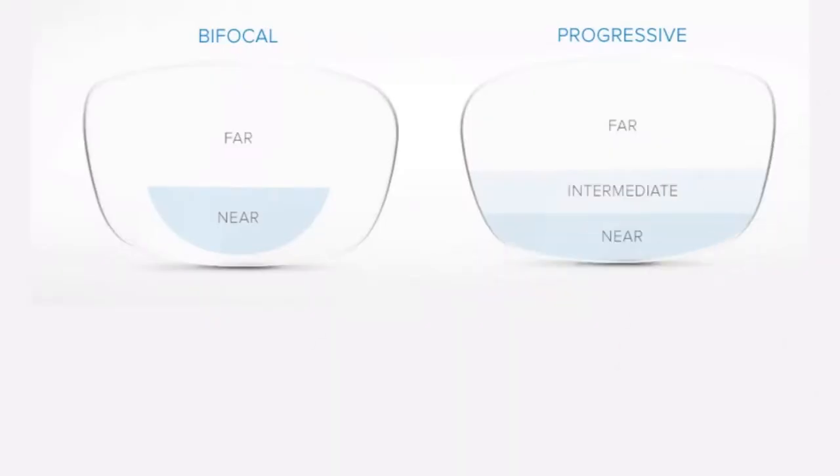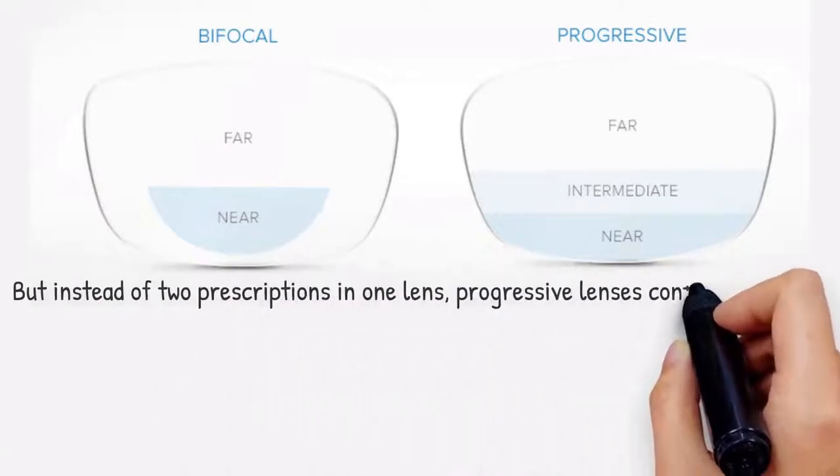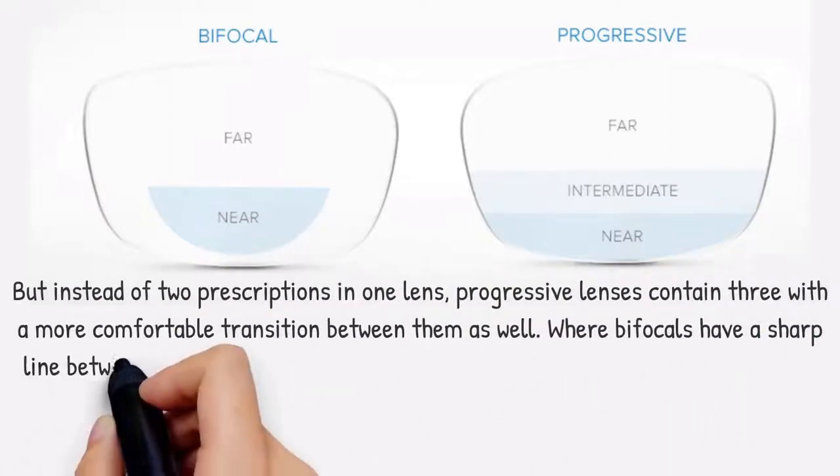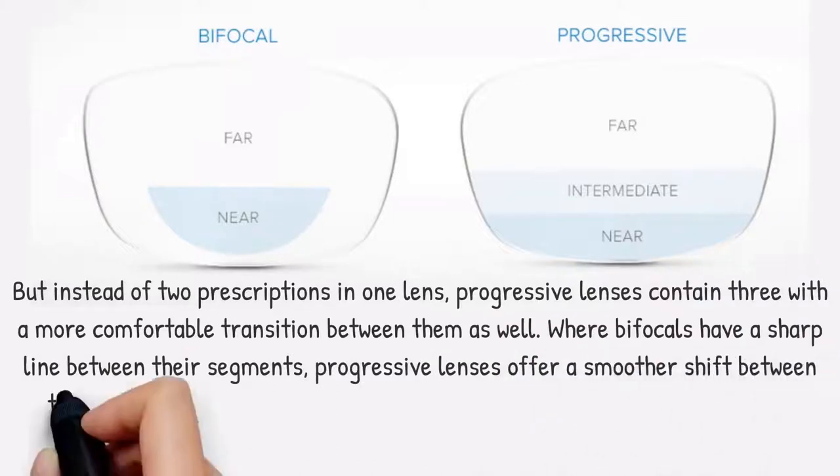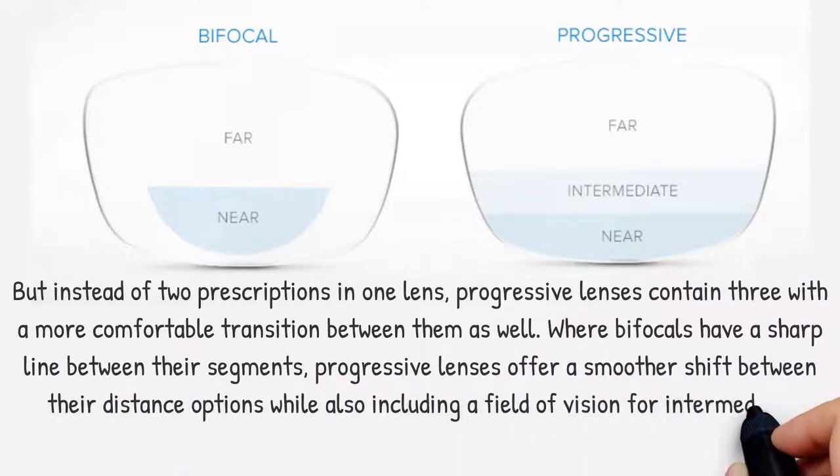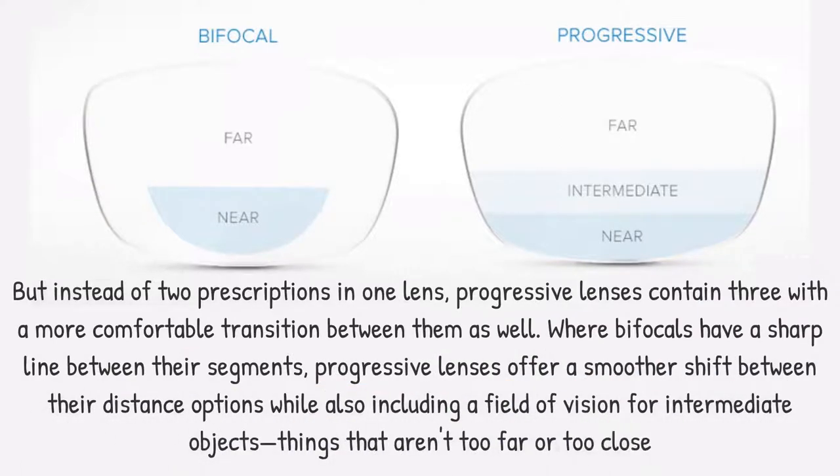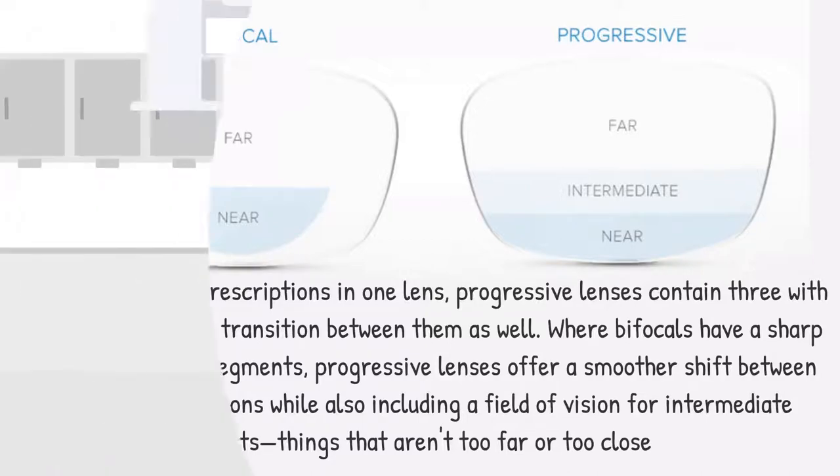Progressive lenses are similar to bifocals, but instead of two prescriptions in one lens, progressive lenses contain three with a more comfortable transition between them as well. Where bifocals have a sharp line between their segments, progressive lenses offer a smoother shift between their distance options, while also including a field of vision for intermediate objects, things that aren't too far or too close.